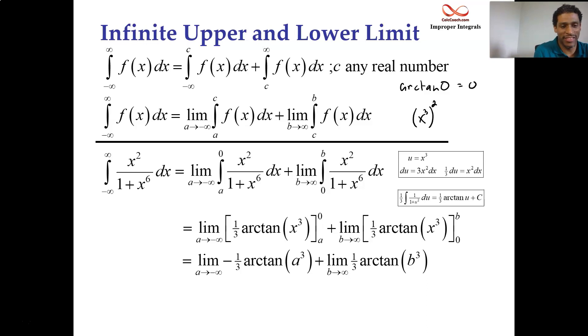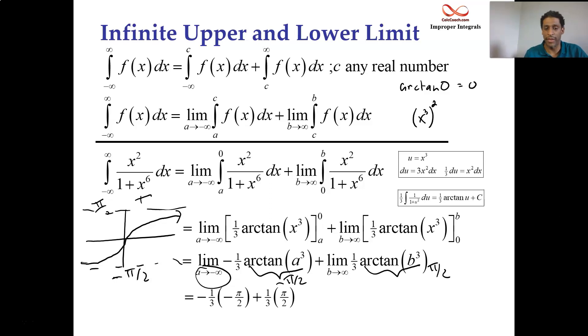You have to remember the graph of arc tan. It has these asymptotes at minus pi over 2, and at pi over 2. The function asymptotically approaches pi over 2 as you approach infinity, and asymptotically approaches negative pi over 2 as you approach negative infinity. This guy's going to head to negative pi over 2, and then this guy's going to head to pi over 2. But with the negative being there, basically you have pi over 6 plus another pi over 6. So you have pi over 3.